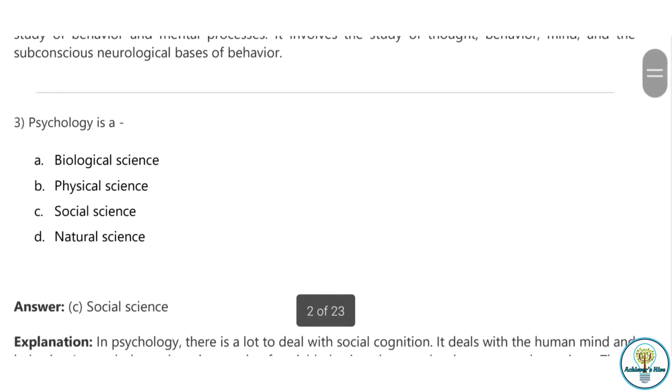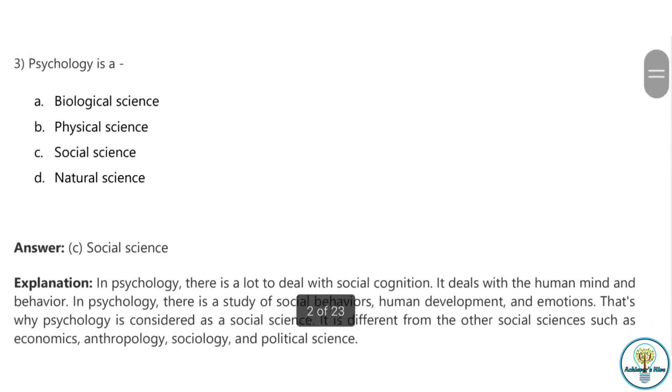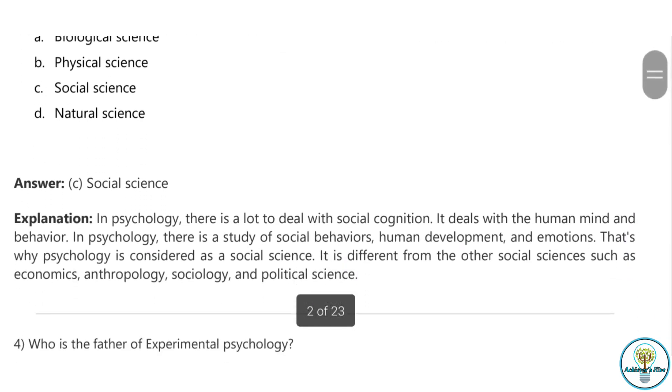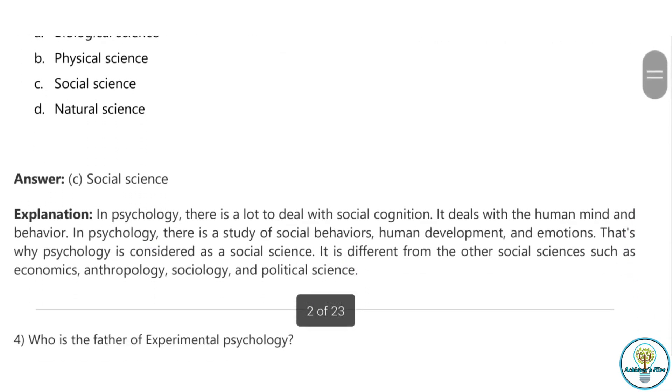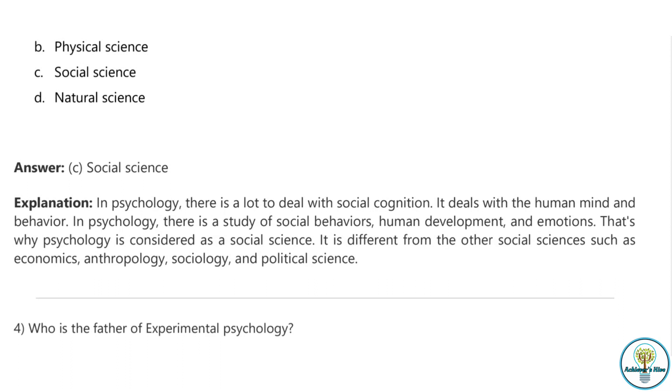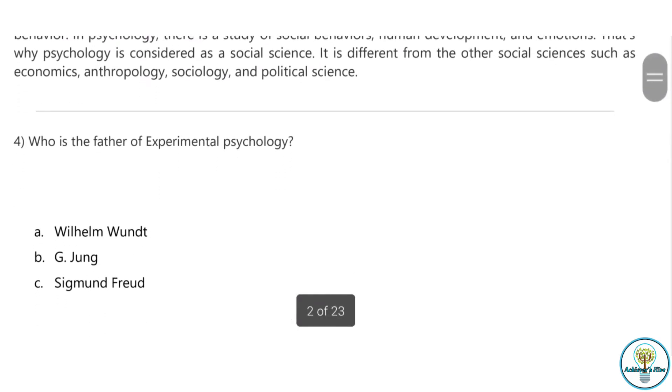Question number three: Psychology is a biological science, physical science, social science, or natural science? Though we see psychology like all these sciences, psychology is majorly considered as social science. It deals with social cognition, the human mind and behavior, social behaviors, human development and emotions. That is why psychology is considered as a social science.